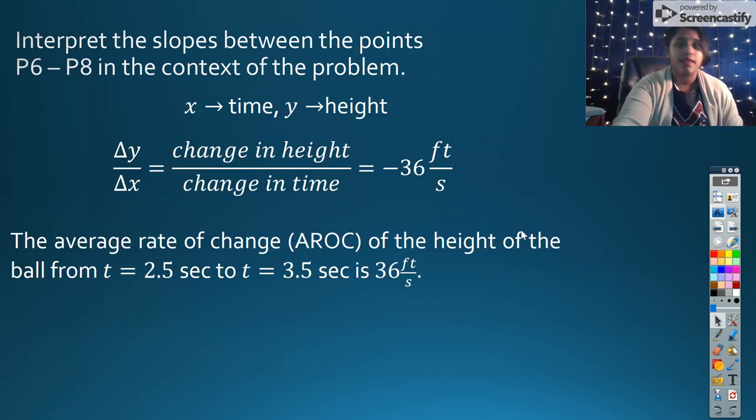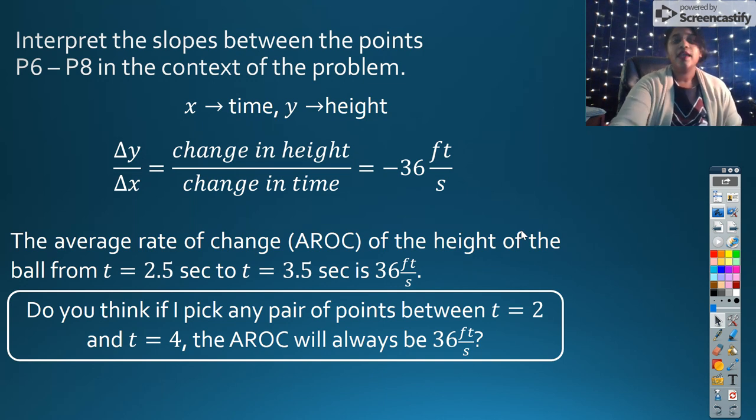Same thing with between P6 and P8. It's the same information. And so I ask you this challenge question to think about before you come in next time. Do you think if I pick any pair of points between T equals two and T equals four, the average rate of change will always be 36 feet per second? I want you to think about that.